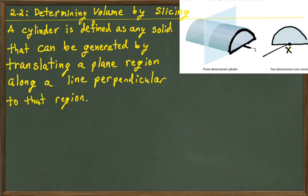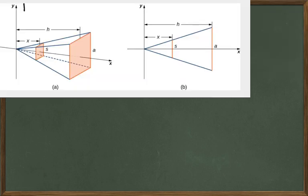We're going to look at deriving the volume of a pyramid using integration. You can imagine here is your square in the x-y plane, and then we just pull it along, but at the same time it's actually shrinking down. So it's not quite a cylinder because it's shrinking down, but a related idea.